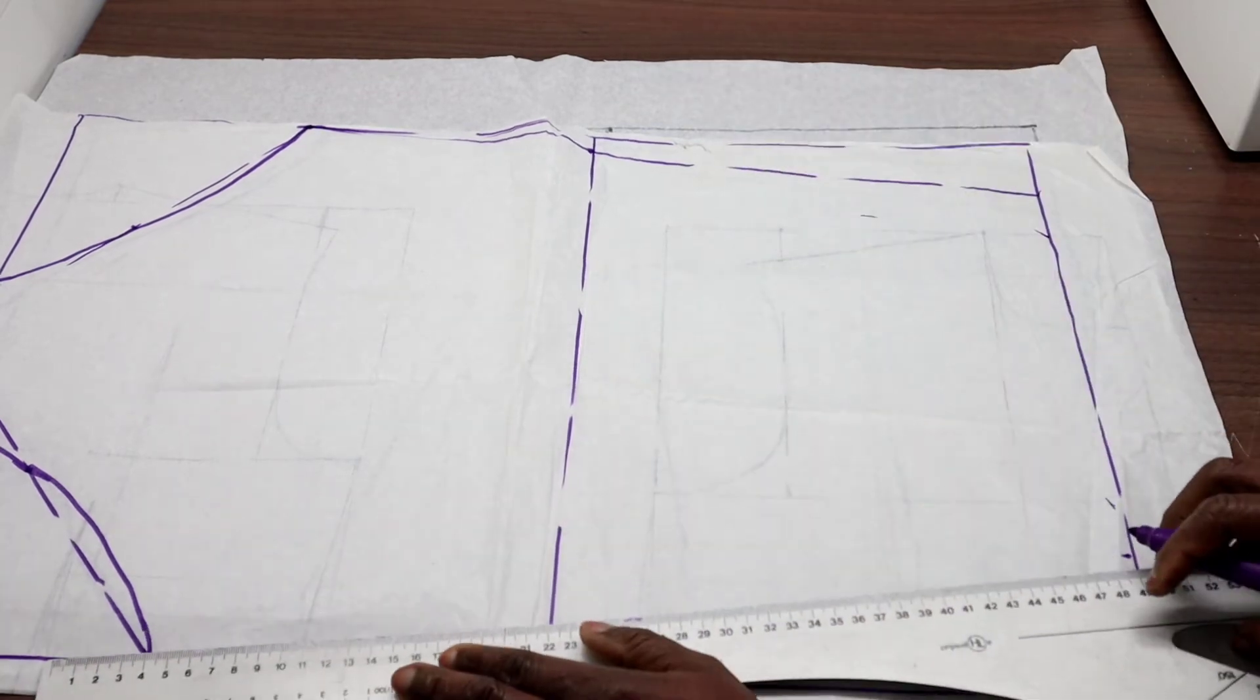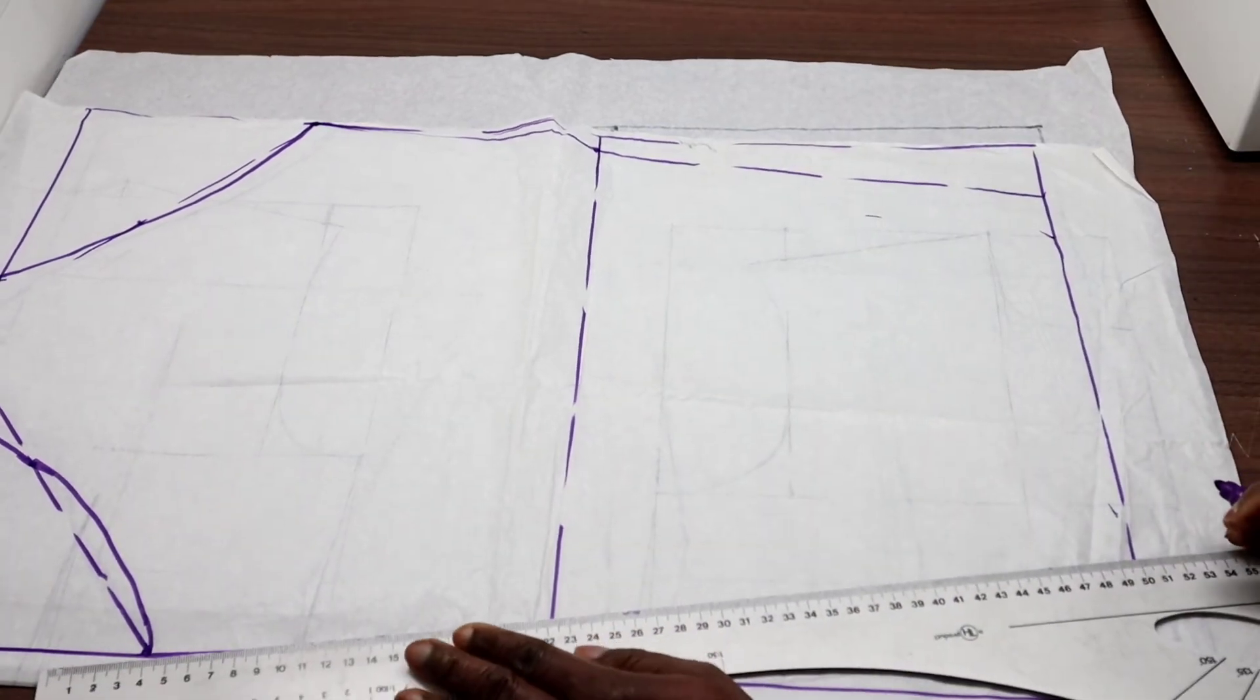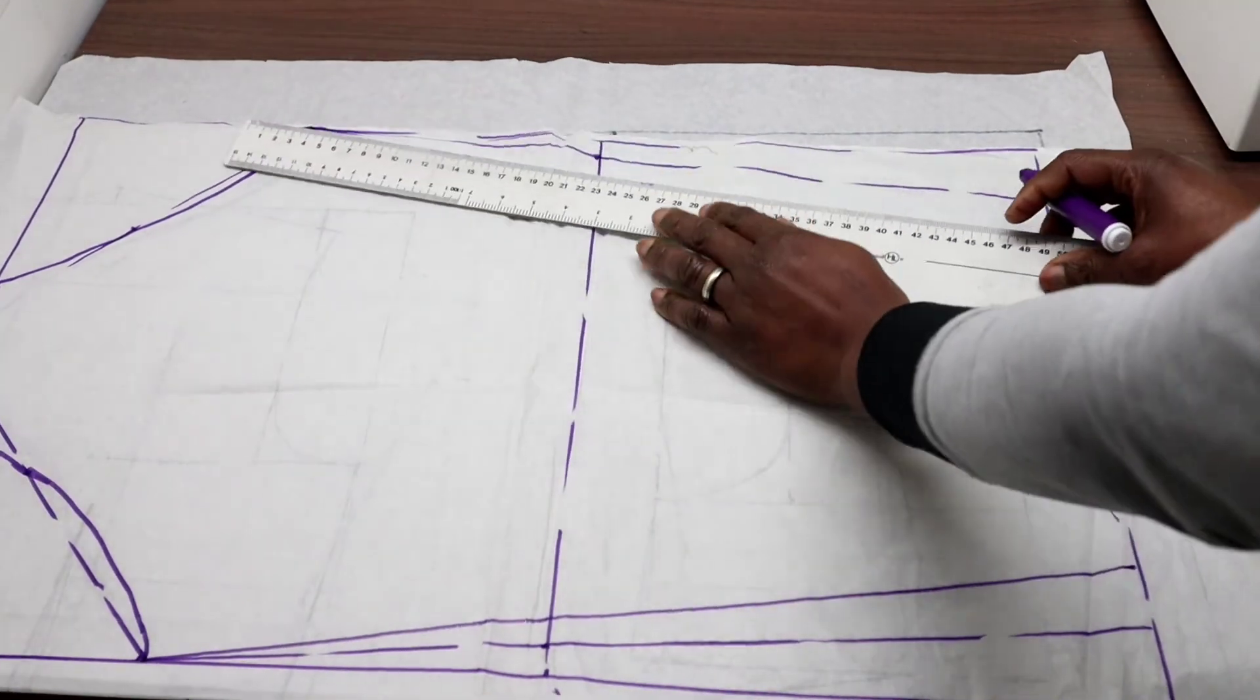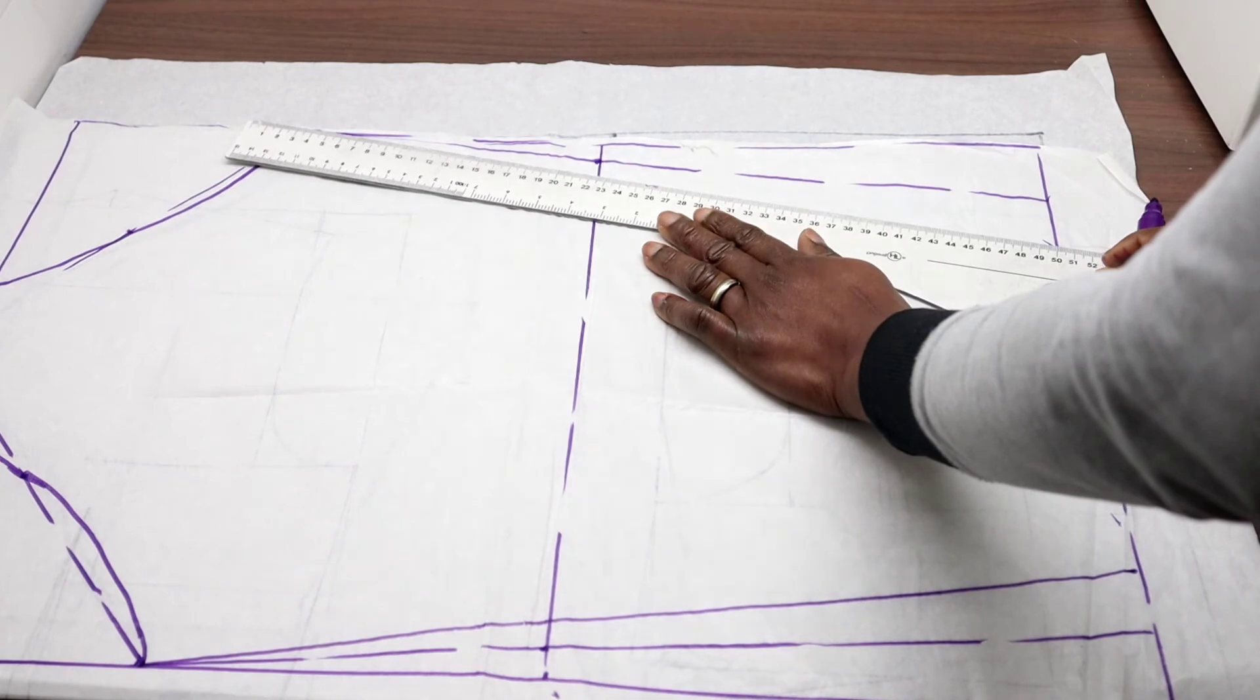Now I'm going to draw the correct sleeve lines. This is my sleeve lines. I will draw the same on this side.